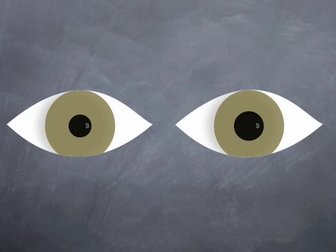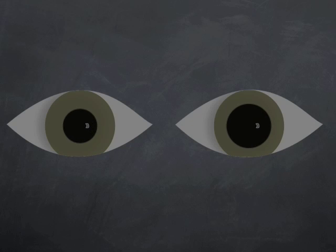Finally is pupil asymmetry up to 2mm that doesn't change in light or dark. Both pupils change size but the relative difference remains the same. This is present in up to 20% of normal people and termed physiological anisocoria.